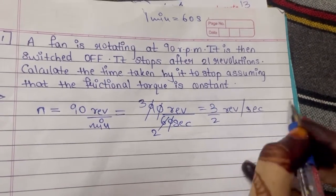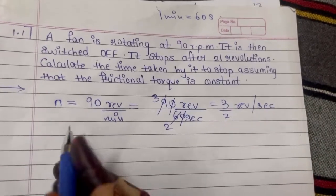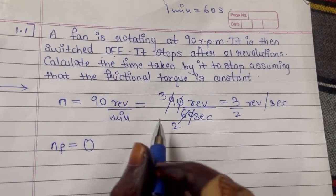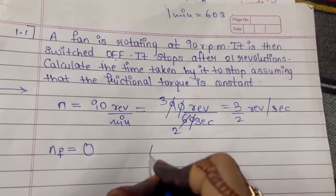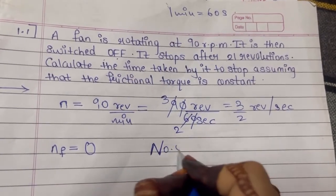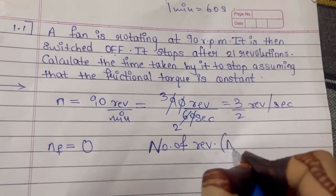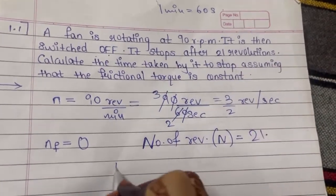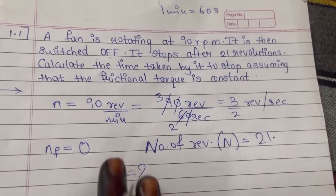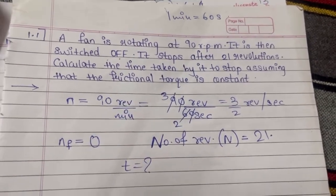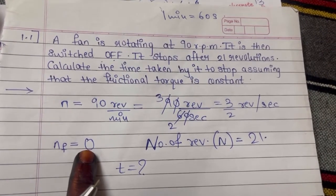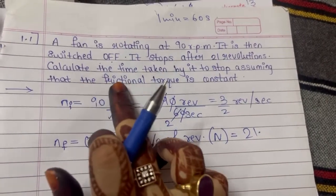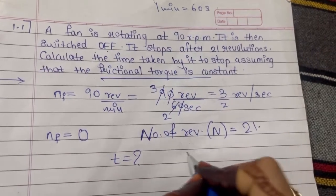The fan is then switched off, so the final frequency is 0. It stops after 21 revolutions, so capital N — the number of revolutions — is 21. We need to calculate the time taken by the fan to stop. The final frequency is zero (it has stopped) and the initial frequency is 3/2. We must find the time taken, assuming frictional torque is constant.